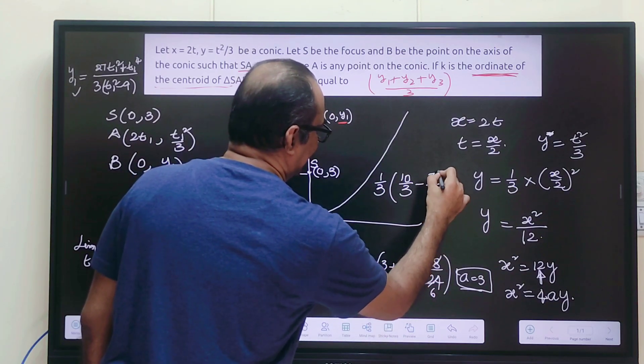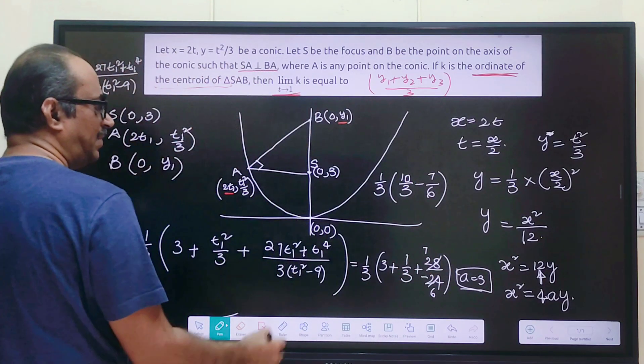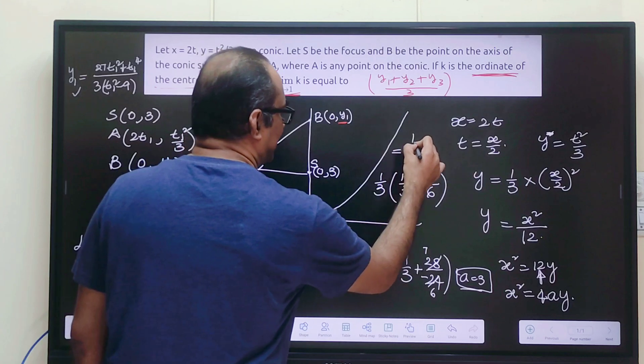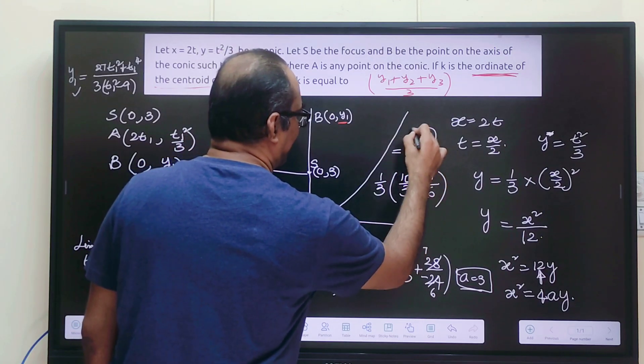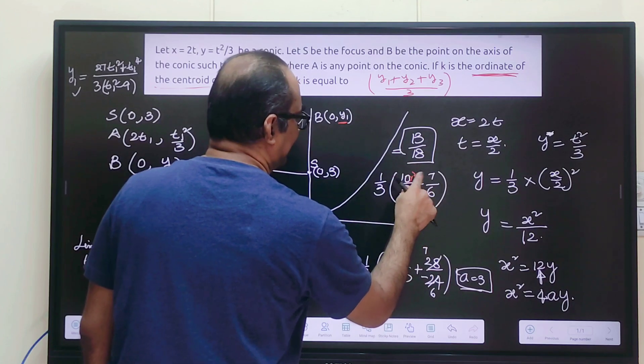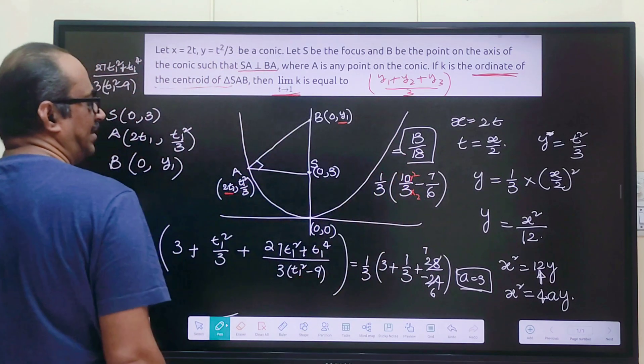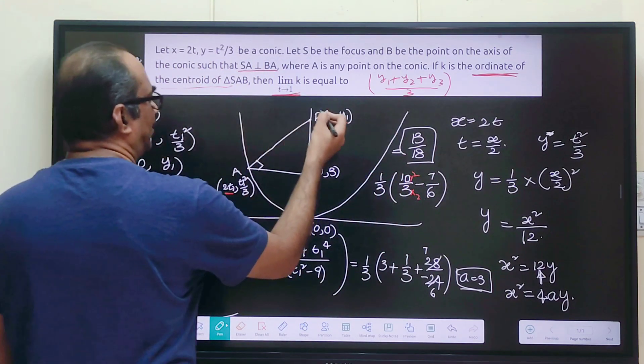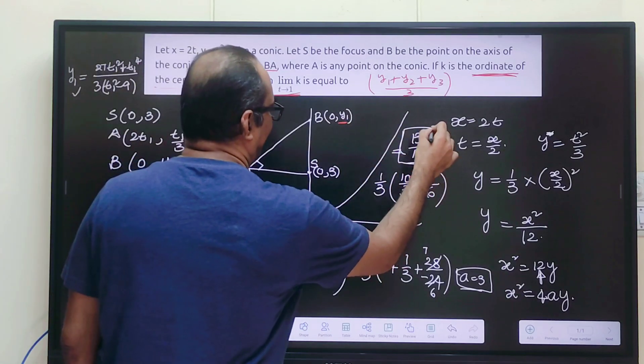Simplify that. That will be 13/18 because 20/6 - 7/6 = 13/6 times 1/3. So the answer is 13/18.